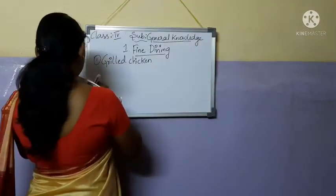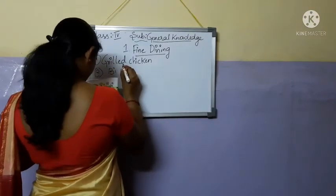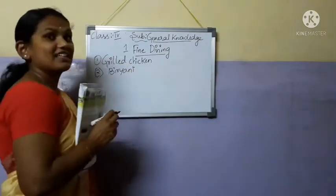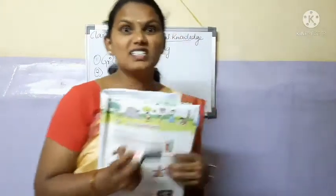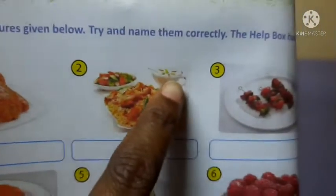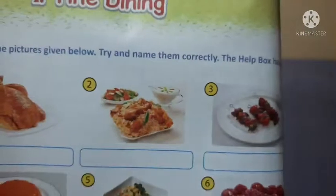The second one is biryani — chicken biryani. You can see the leg pieces clearly. There are two leg pieces, raita, and salad served with it. You have to take them together and eat. Have you all tasted this?